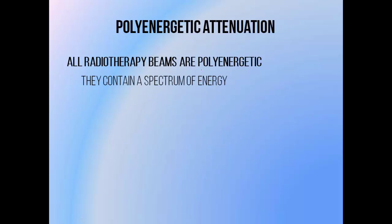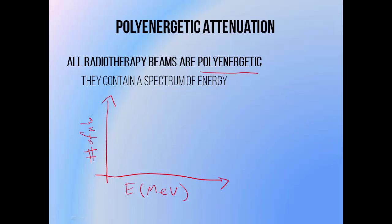Radiotherapy beams are polyenergetic — made up of a whole spectrum of different energies. If the x-axis is photon energy in MeV and the y-axis is the number of photons at each energy, the beam's energy spectrum will generally have a maximum energy. For example, a 6 MV beam (labelled by its maximum energy) is mostly composed of photons with a much lower energy, but contains fewer very low-energy photons because we filter those out in clinical practice. If the beam wasn't filtered, the number of photons would continue to increase as energy decreases.